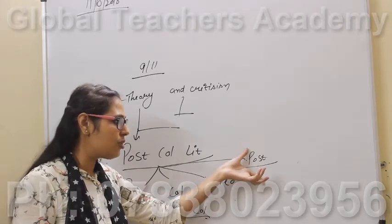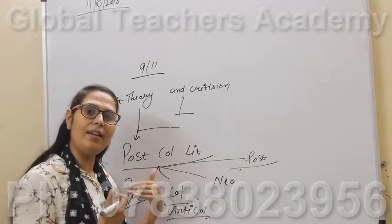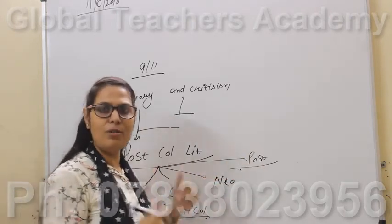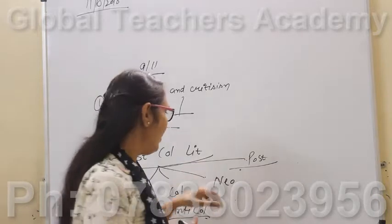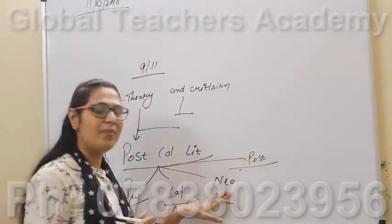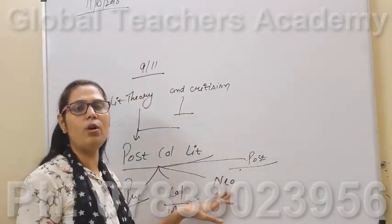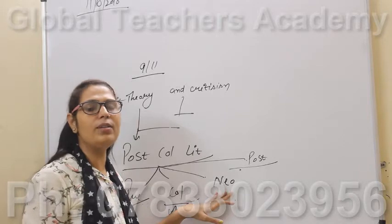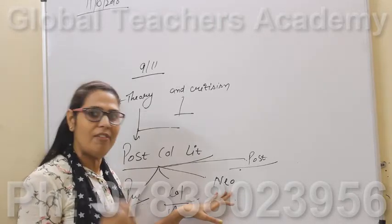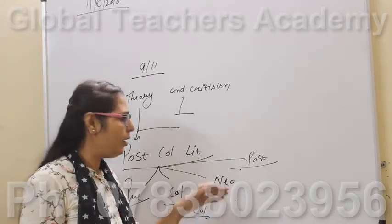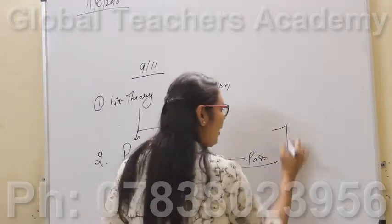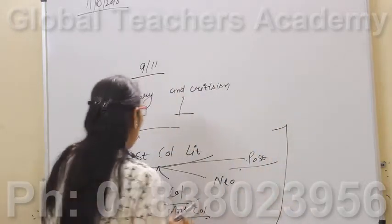After that comes the post-colonial phase — when the colonizers went away from the country. Neo-colonialism is related to that: they handed their authority to rule the country to different people, and having that authority became neo-colonialism. That is also a part of this literature.